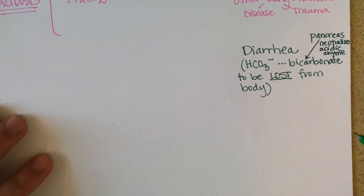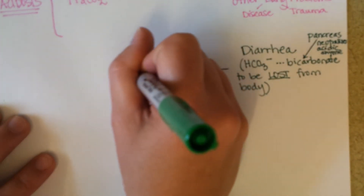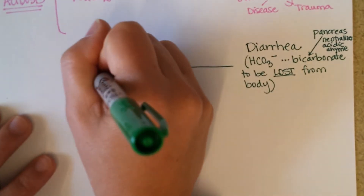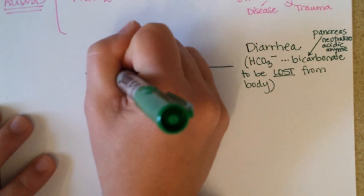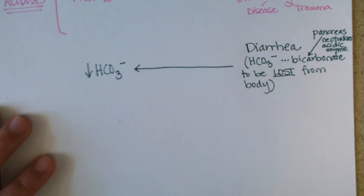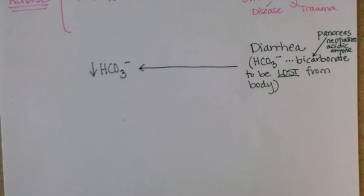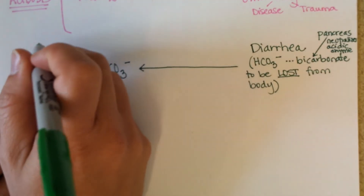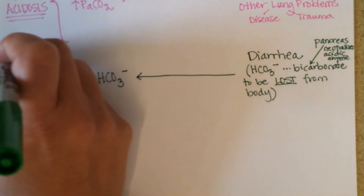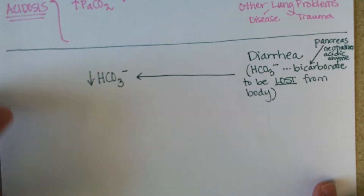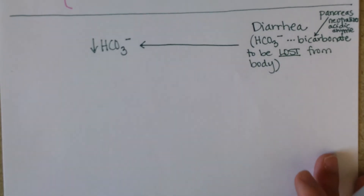If someone has very bad diarrhea, they're losing that bicarbonate in their feces. Normally it's reabsorbed, so they end up without enough bicarbonate in the blood anymore. By losing bicarbonate, the blood becomes more acidic. This separates respiratory acidosis from metabolic acidosis, which we're now listing causes of.